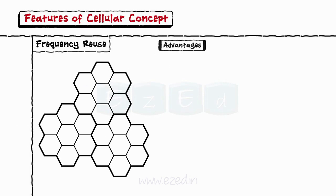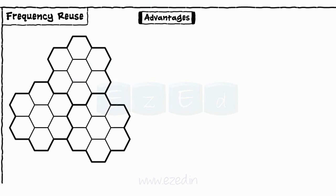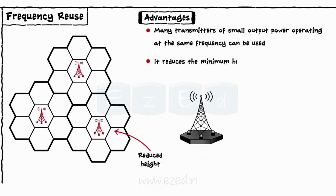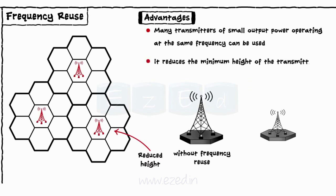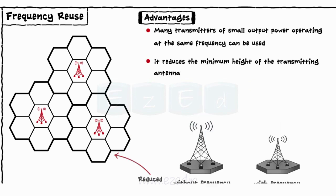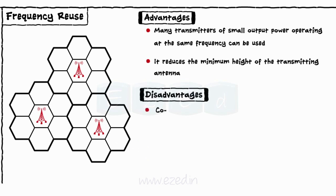The advantages of frequency reuse are: many transmitters of small output power operating at the same frequency can be used. It also reduces the minimum height of the transmitting antenna, as each antenna has to cover only a small distance. However, the disadvantage is that if the system is not properly designed, it may lead to co-channel interference.